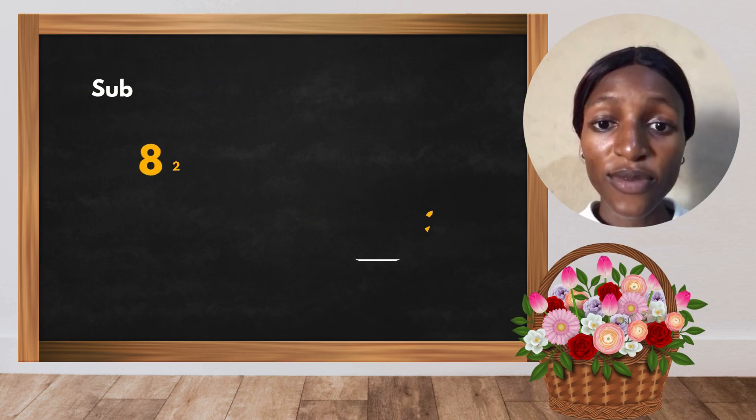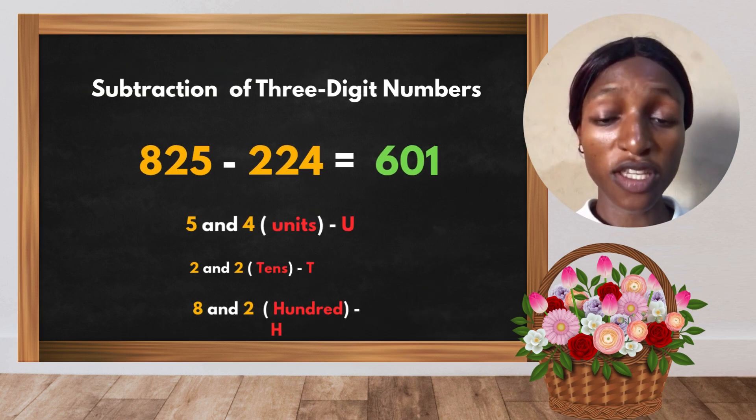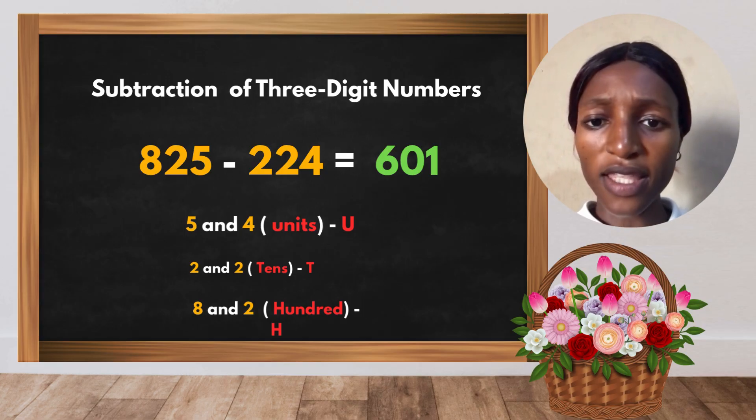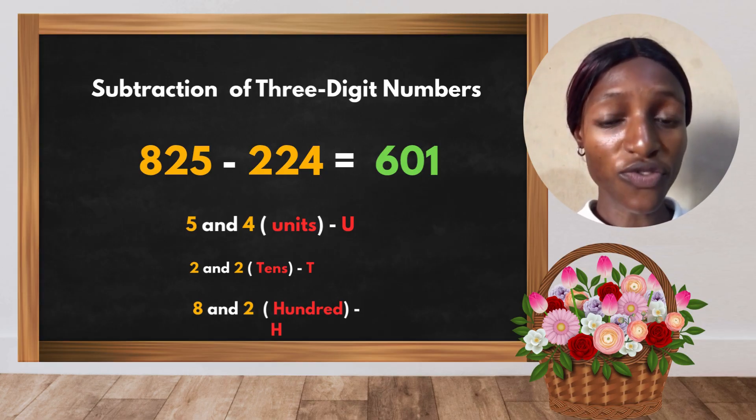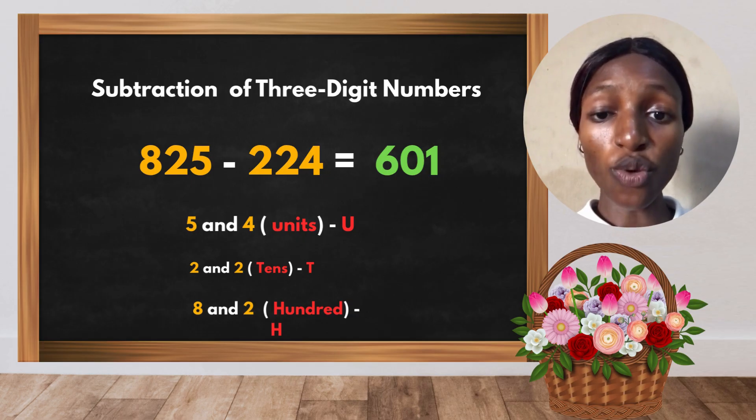Good, so we are done with two-digit numbers. So let's dive into three-digit numbers. Do not forget, three-digit numbers are up to 100. So now we have 825 minus 224, which gives us 601.